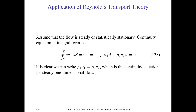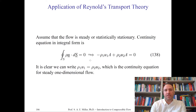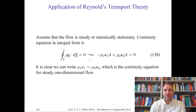We'll assume that the flow is steady or statistically stationary. Steady flow means it is temporally invariant — not changing with time. Statistically stationary means the flow could be unsteady, but if we take time averages of velocity or pressure fluctuations, they yield a mean value that does not change in time. This is a simplistic definition of statistically stationary.